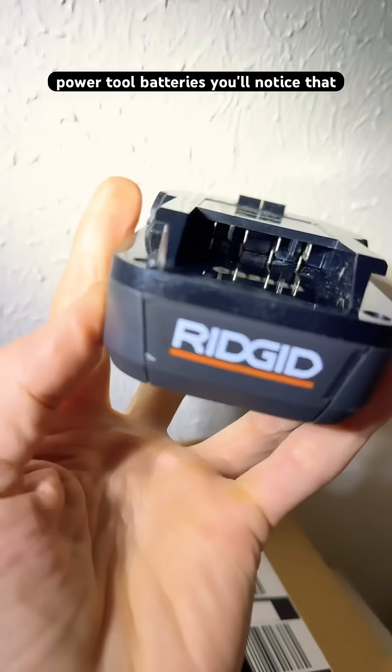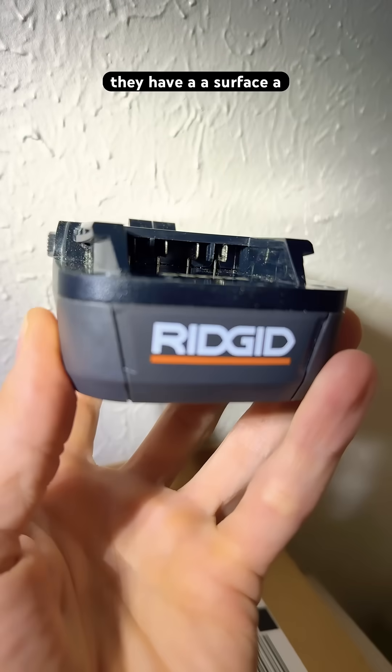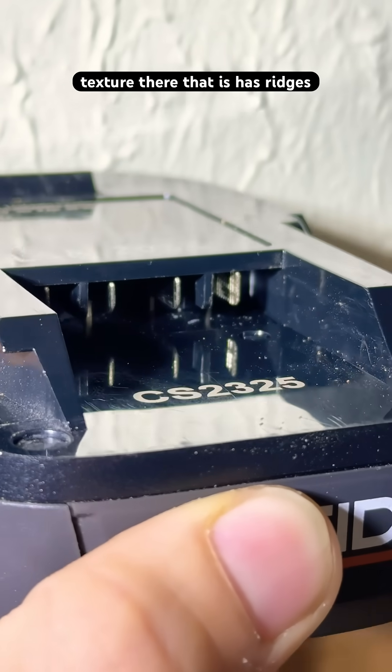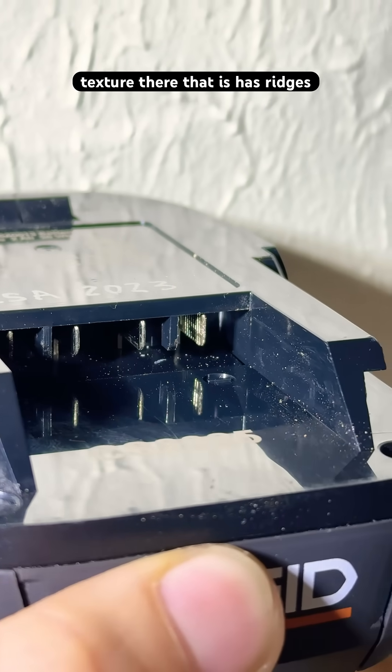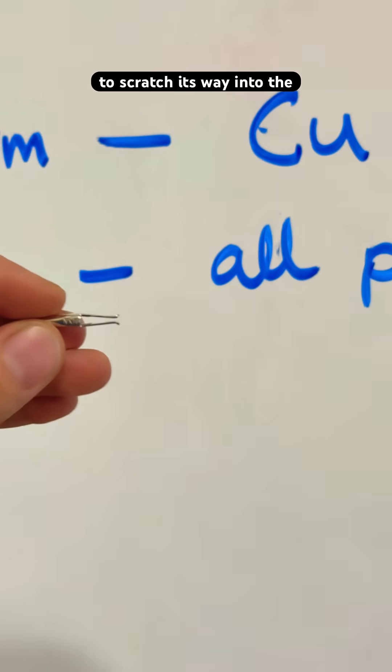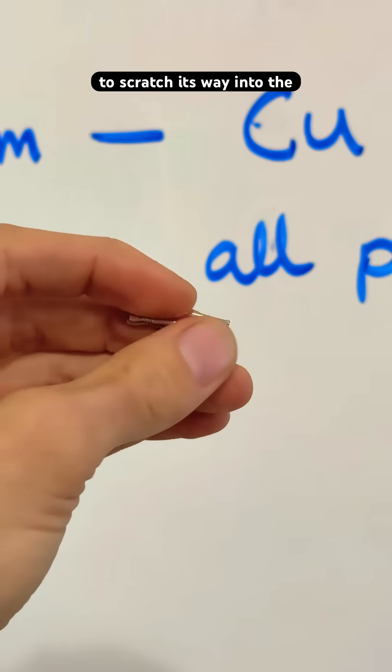Inside of your power tool batteries, you'll notice that they have a surface, a texture there that has ridges, almost like a file. That means the tab component is almost going to scratch its way into the center of this.